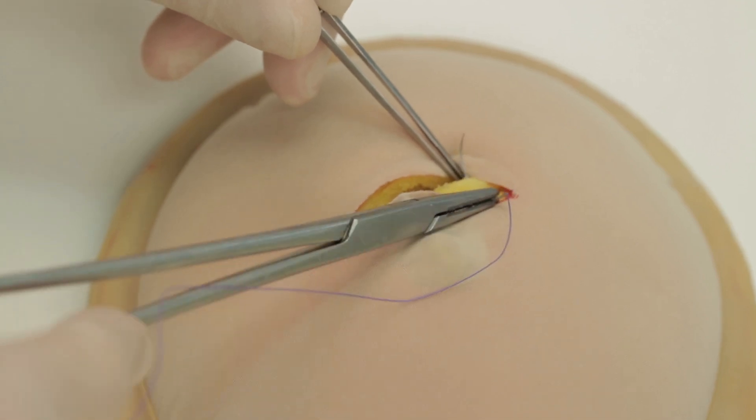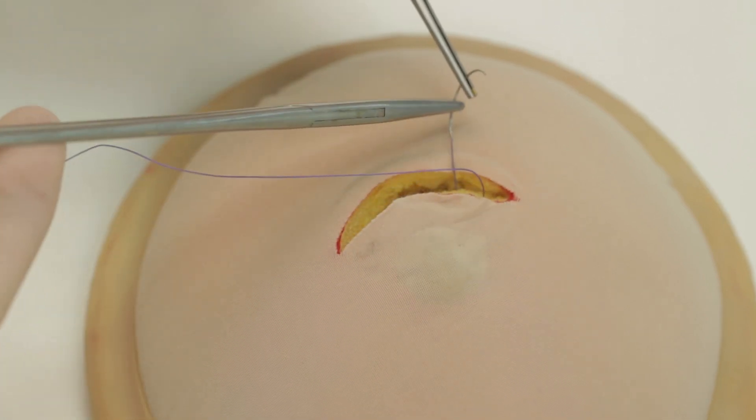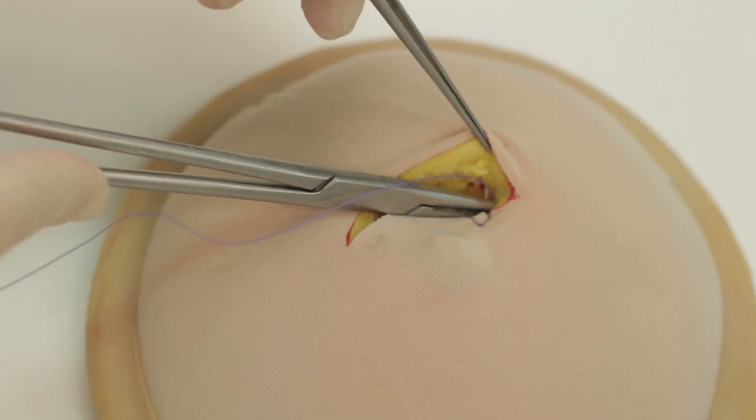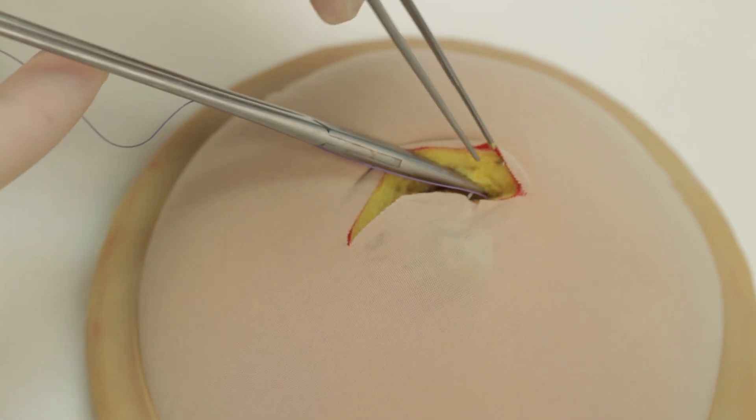In vivo, once haemostasis has been secured, the defect can now be closed. In this instance, the dead space is closed using interrupted 2-0 Vicryl sutures.